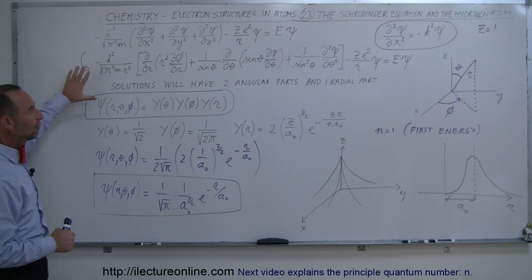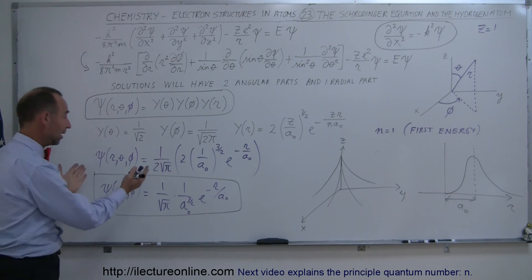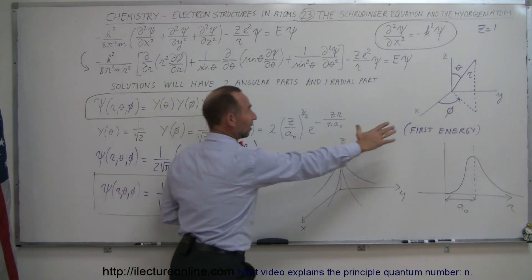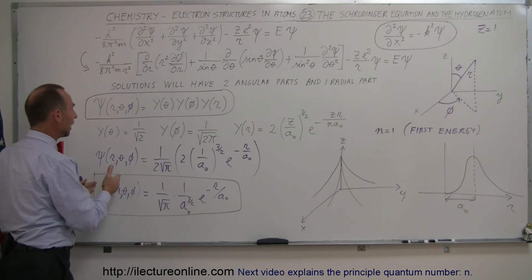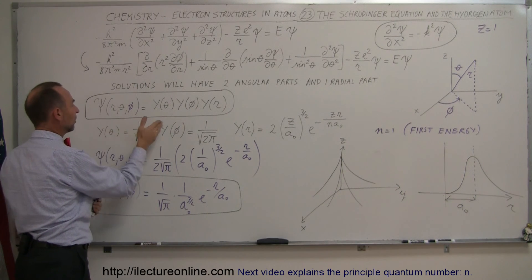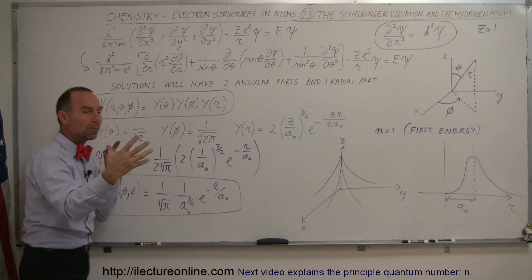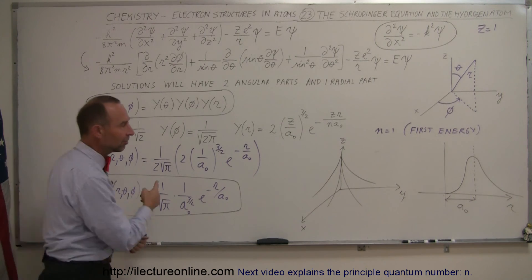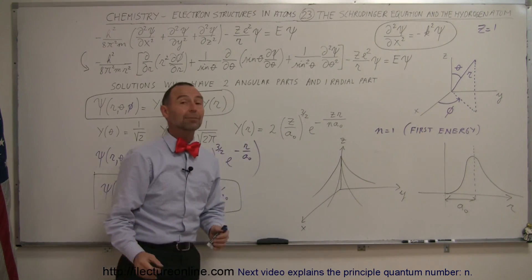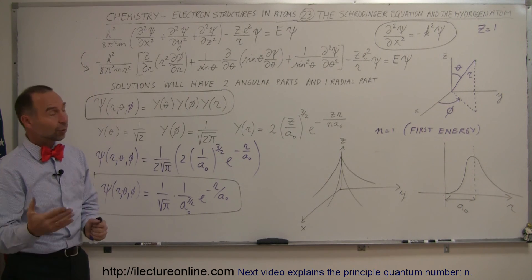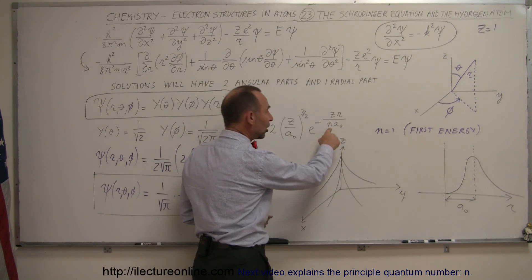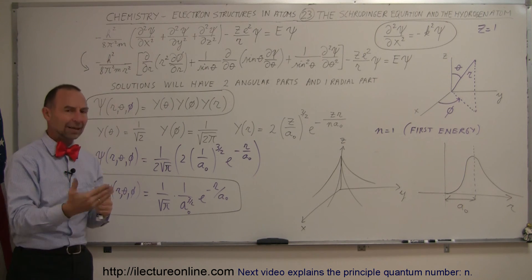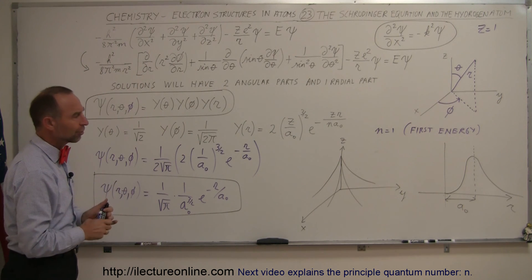I just wanted to give you a feel that there's a real reason why we're able to come up with those shapes, based upon finding the solution to the Schrödinger equation in three dimensions — in spherical coordinates. Once we multiply the behavior in the theta direction, the behavior in the phi direction, and the behavior in the radial direction together, we form the wave function. Squaring that wave function gives a probability density, defining where the electron is most likely to be found. As n changes, the orbitals take on different shapes — that's how we end up with the S, P, D, and F orbitals.